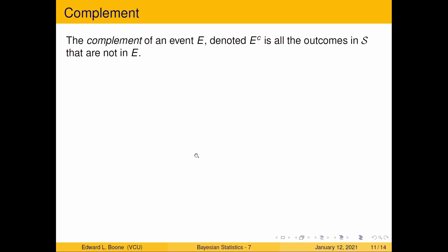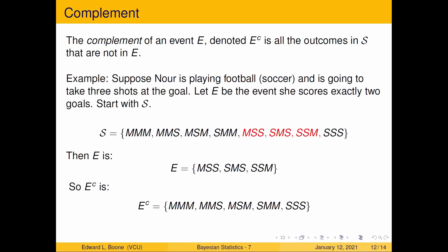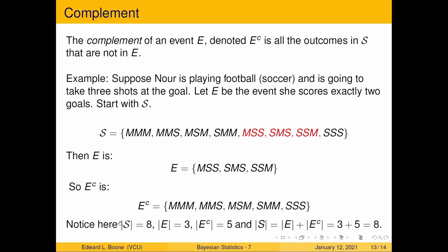The complement of an event, denoted E with a superscript C, is all the outcomes in S that are not in E. So E complement is all the other outcomes that aren't in E. Notice that the sample space has eight outcomes, E has three outcomes, and E complement has five outcomes. Also notice that the size of the sample space equals the size of E plus the size of E complement: three plus five equals eight.